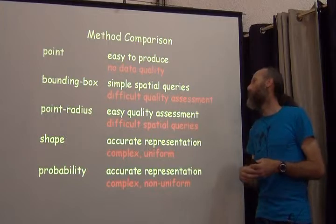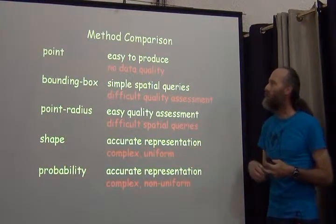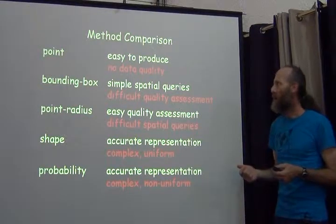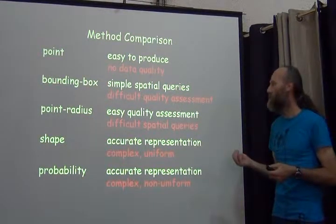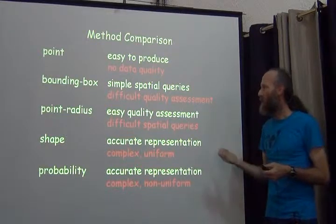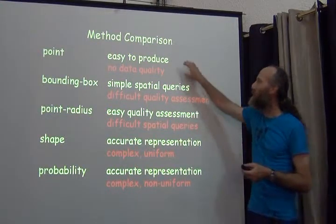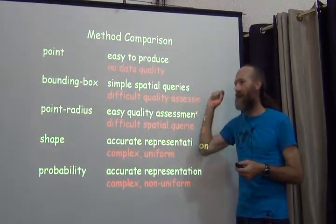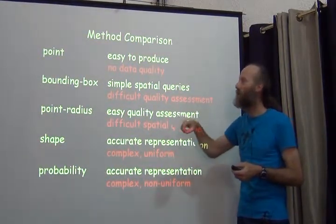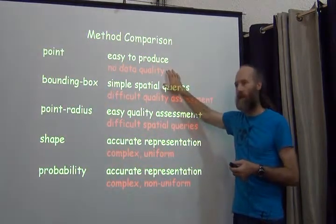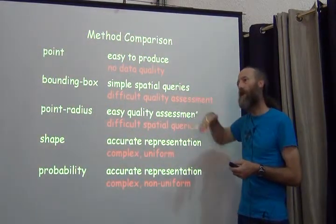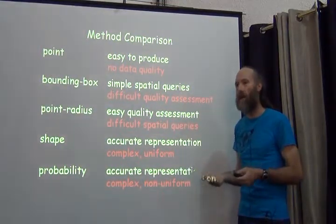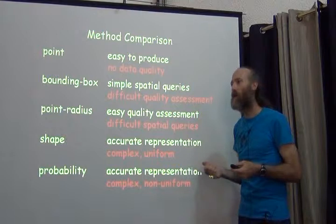Comparing all of these methods, let's talk about two fundamental aspects: how easy are they to use, and how good are they? The point method is quite easy to produce — latitudes and longitudes, you just go to Google Maps and find the coordinate at the center of the place. But there's no data quality associated with it. No user down the road can know how, or whether, to use that point, because they don't know how specific it is.